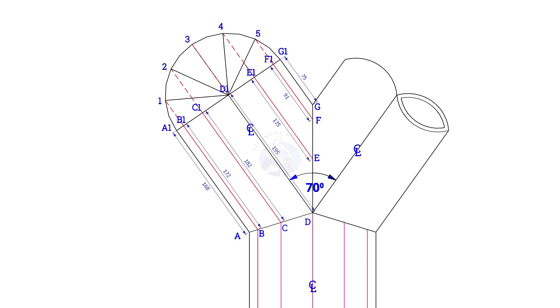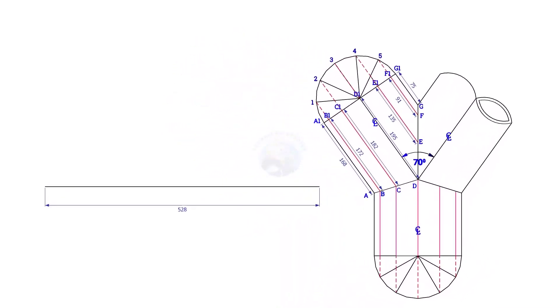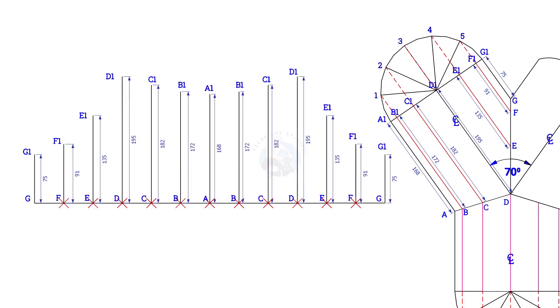Note down the lengths. Draw the pipe circumference line. Divide the line into 12 equal parts and draw vertical lines G, E, G1, F, F1, etc. And draw a curve as in the previous layout.